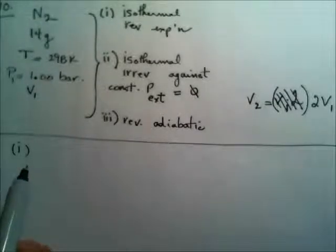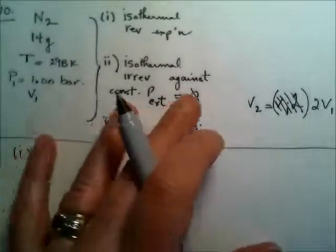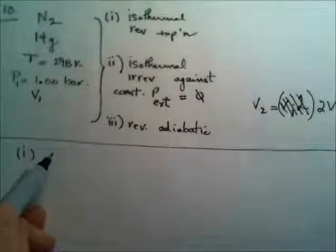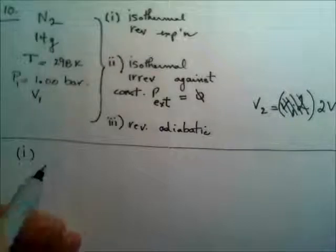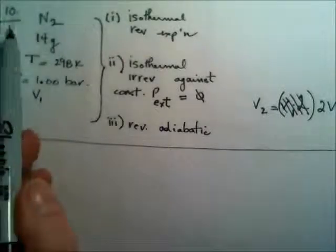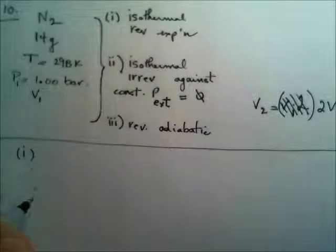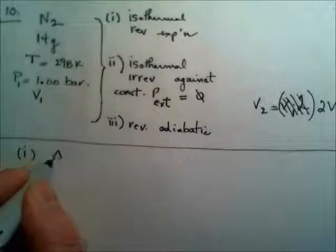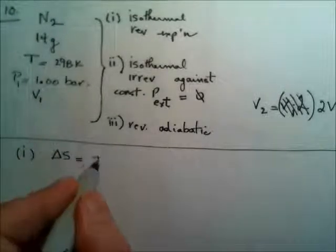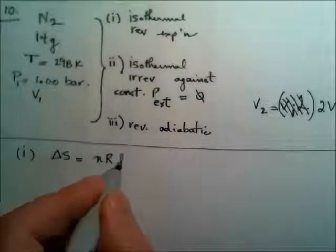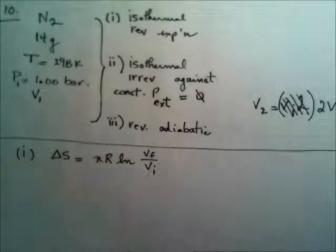Isothermal reversible expansion. So I don't know if you're watching these videos in order, but we've done an isothermal reversible expansion probably more than once in the questions that come leading up to number 10. And so I think at this point, I'm ready just to say that delta S is equal to nR ln(V final/V initial).